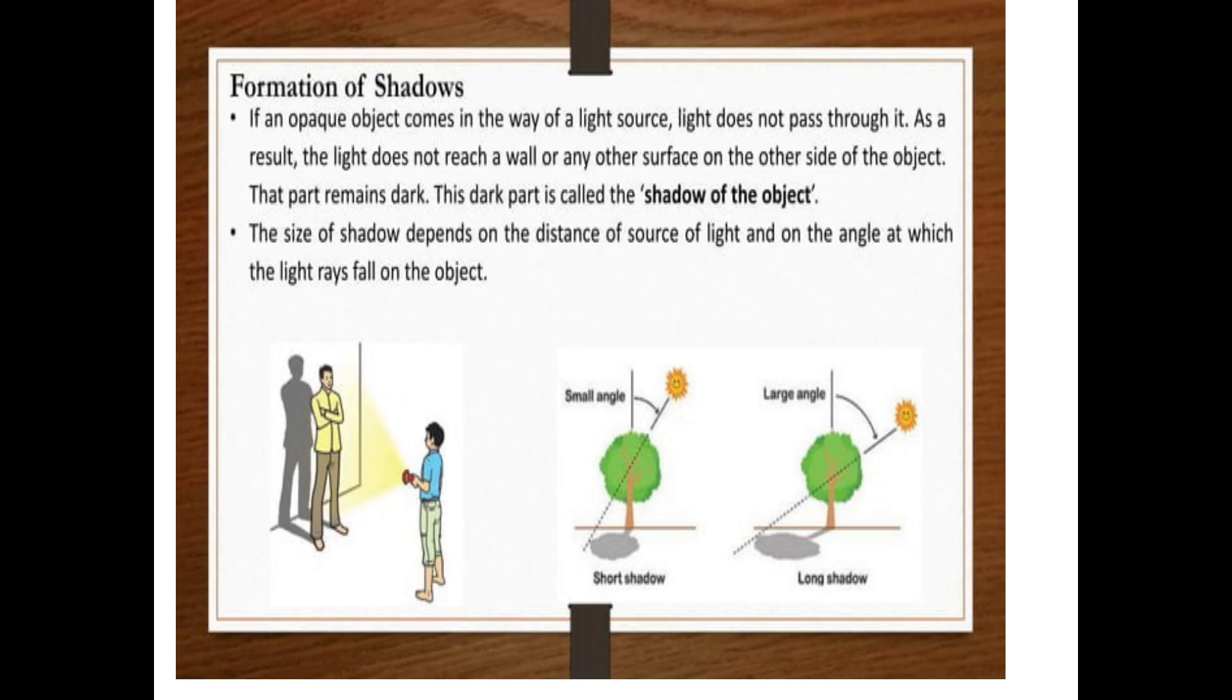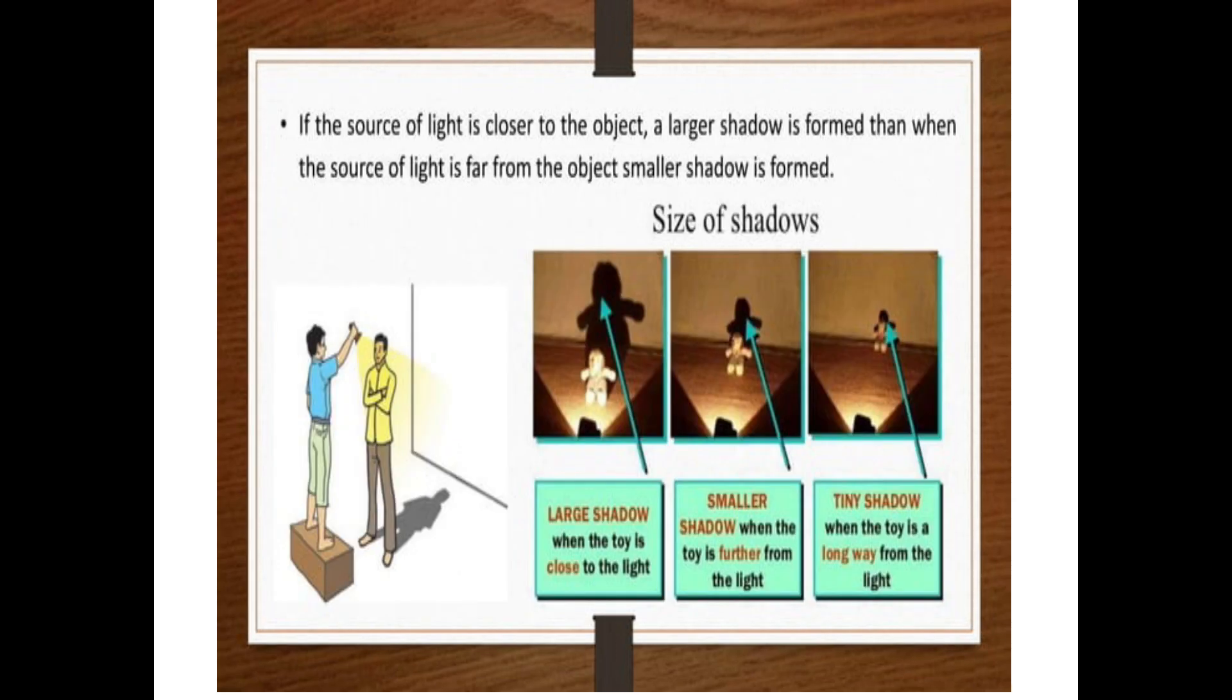The size of shadow depends on the distance of source of light and on the angle at which the light rays fall on the object. If the source of light is closer to object, a larger shadow is formed. When the source of light is far from the object, smaller shadow is formed.